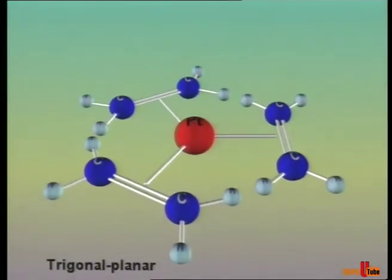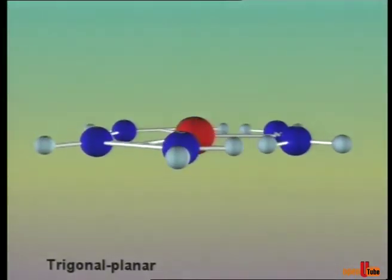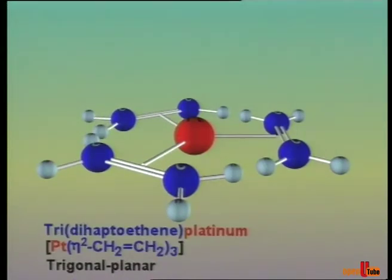In this compound, three eta-2 ethene ligands have donated three electron pairs to the metal. Therefore, coordination number is 3 and geometry is trigonal planar.